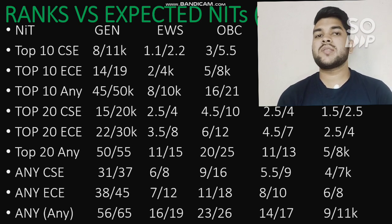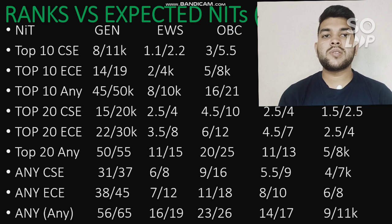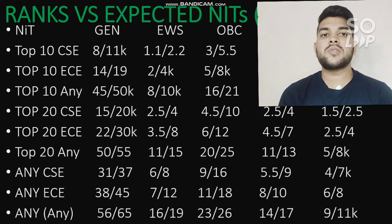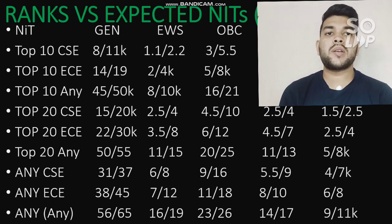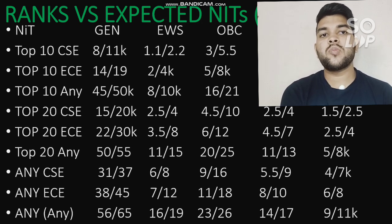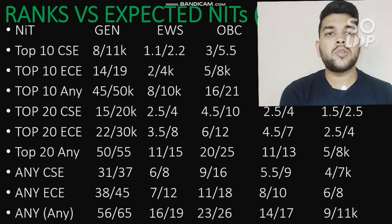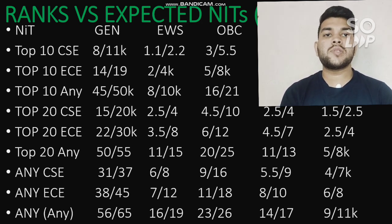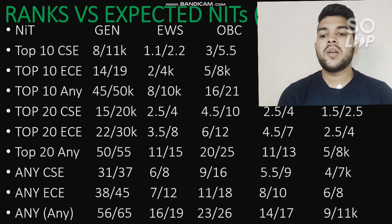For any NIT with any possible branch: General category ranks go up to 56,000 and 65,000, because as mentioned earlier, cutoffs for non-CS branches have gone up this year. I am taking the reference from round 2 since that reflects actual student decision-making. Almost 90% of students are looking for CS-related branches but cannot get them due to their rank — their first priority is CSE or EC. For OBC it will be 23,000 and 26,000; SC 14,000 and 17,000; ST 9,000 and 11,000.